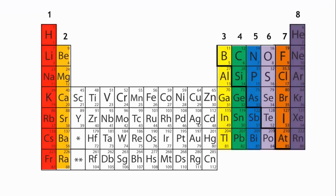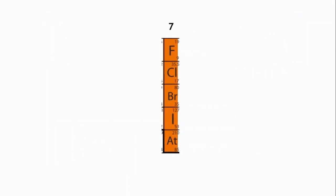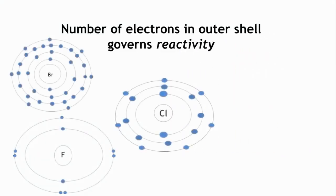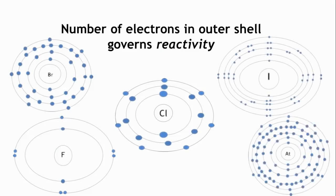For example, let's look at group 7. Fluorine, chlorine, iodine, bromine, and astatine. They all have 7 electrons in their outermost shell, and all exhibit similar chemical characteristics.